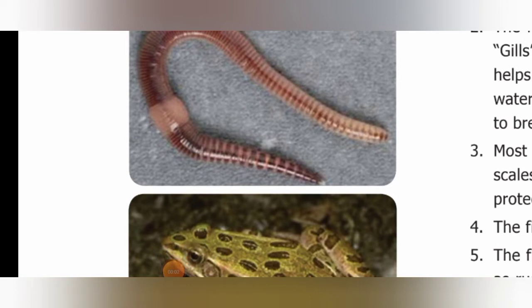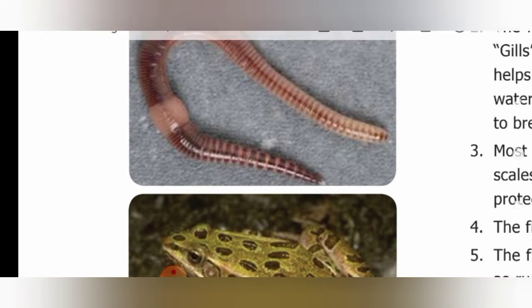So far we have studied about the unicellular organisms. Now we are going to discuss about multicellular organisms. The majority of organisms we see around us, including animals, are multicellular. In such organisms, different functions are carried out by different groups of cells or organs in their body. We know that in our body various functions are going on — digestion, excretion, circulation, locomotion, etc.